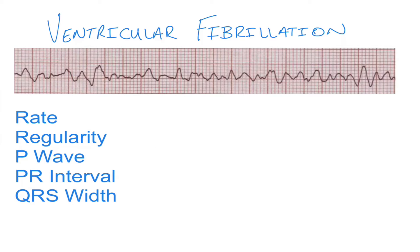In this video we're going to look at ventricular fibrillation, also known as V-fib. The rate with V-fib is something we can't determine — it is going to be so chaotic that getting an accurate rate is just not possible.